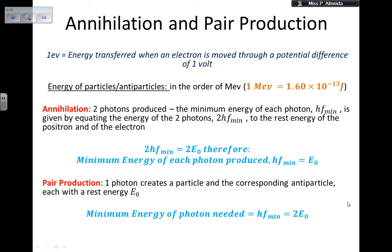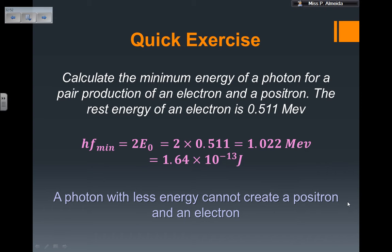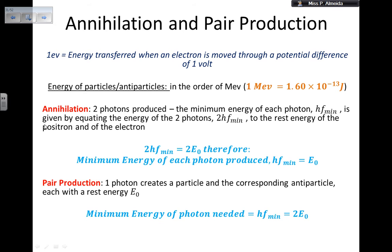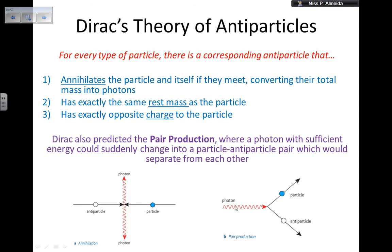Quick exercise: calculate the minimum energy of a photon for pair production of an electron and a positron. The rest energy of an electron is 0.511 MeV. The rest energy of the positron is exactly the same. For pair production, I use hf_min = 2E₀.